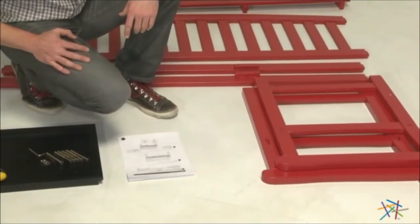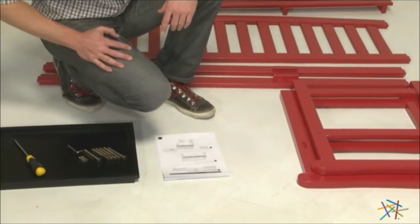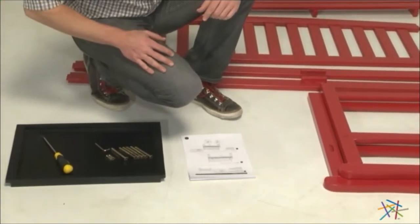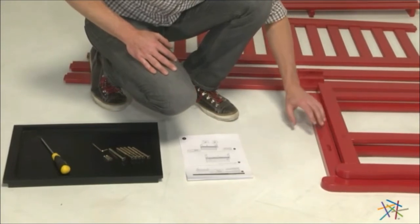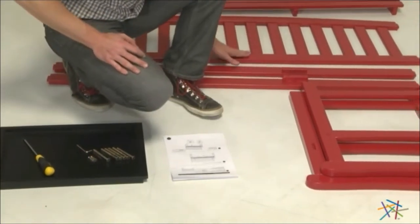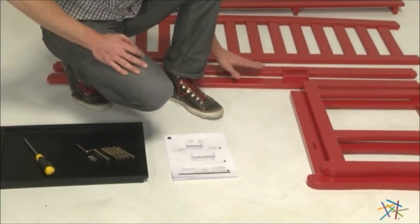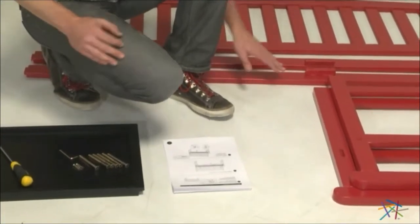After you've carefully unpacked and taken an inventory of your hardware and parts, it's time to move on to step one, which is a two-part step: assembling part A (the left arm) and part B (the right arm) to parts D and E (the frame and two supports).